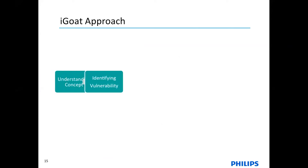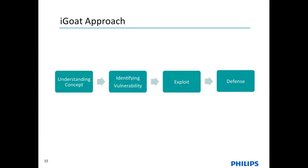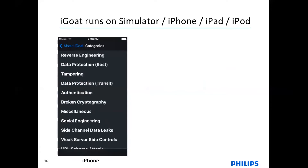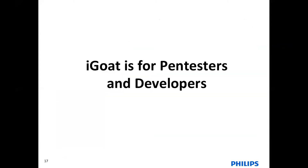The iGoat approach is very straightforward. First you will understand the concept, then identify the vulnerability. Once you identify the vulnerable point, you exploit it — and it doesn't end there. You will learn how to defend and how to implement protection against the vulnerability. The best thing about iGoat is it runs on the simulator, but at the same time it supports all iDevices including your iPhone, iPad and iPod. If you have any of these devices, you are ready to run iGoat.